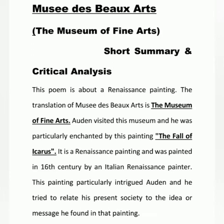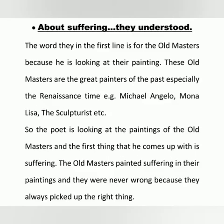This poem is about a Renaissance painting. The translation of Musée des Beaux Arts is the Museum of Fine Arts. Auden visited this museum and he was particularly enchanted by the painting, The Fall of Icarus. It is a Renaissance painting, painted in the 16th century by an Italian Renaissance painter. This painting particularly intrigued Auden and he tried to relate his present society to the idea he found in that painting.